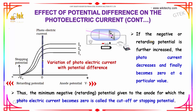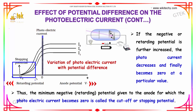If the negative or retarding potential is further increased, the photocurrent decreases and finally becomes zero at a particular potential. The minimum negative potential given to the anode for which the photoelectric current becomes zero is referred to as the cutoff or stopping potential.